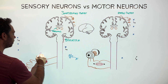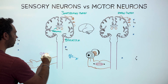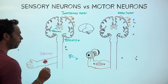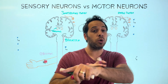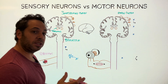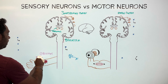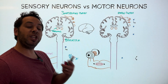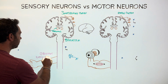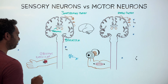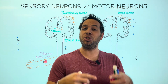Step number one: we have sensory receptors. Their job — and they're located all over our senses, our eyes, ears, nose, tongue, and skin — is to detect stimuli from the world and, more specifically, turn that energy (in this case, touch) into an electrical signal called an action potential, abbreviated AP. So in step one, we detect the stimuli and turn that energy into an electrical signal.